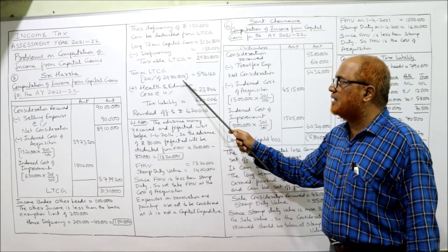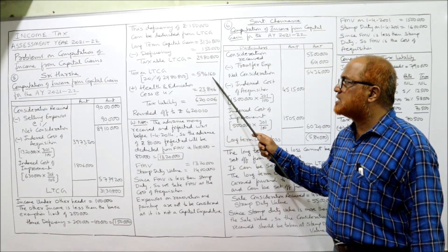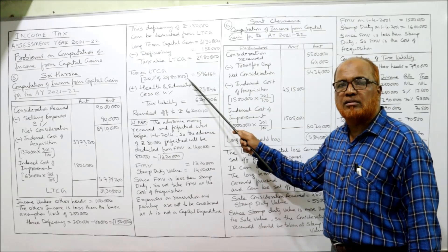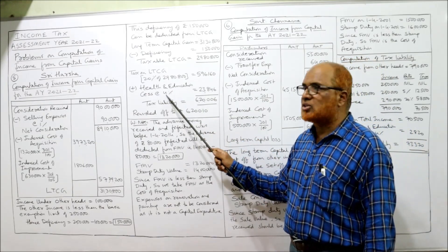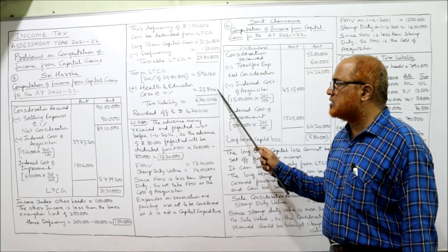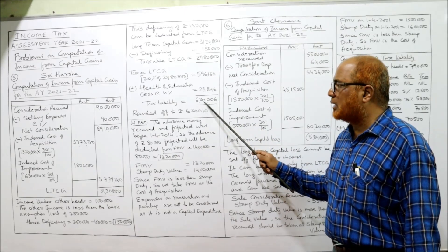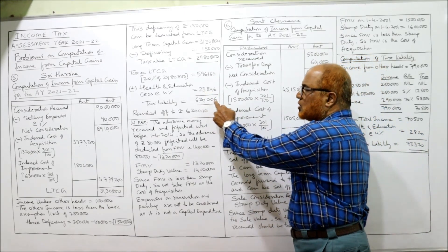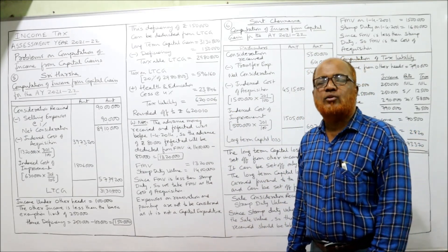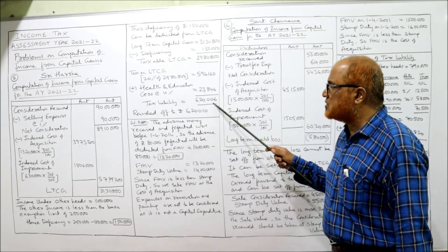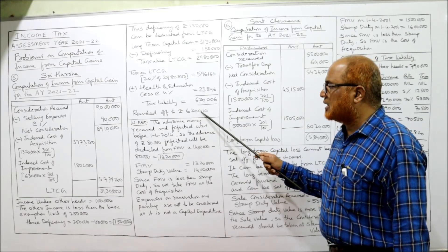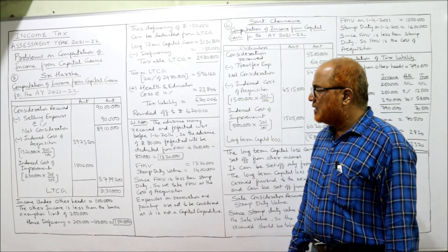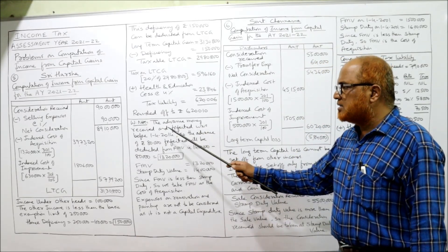Tax on LTCG: 20% of Rs. 29,80,800 = Rs. 5,96,160. To this we add health and education cess at 4% = Rs. 23,846. Total tax liability = Rs. 6,20,006, which rounds off to Rs. 6,20,010. That is the rounded-off tax liability.